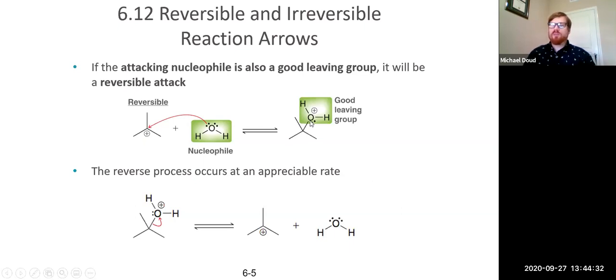The same thing is true, for example, with bromide or iodide or chloride. Those are all decent leaving groups. And so you would have a reversible attack of a nucleophile if any of those halides did. And the word is here just basically the loss of a leaving group occurs at a rate that does make a difference.